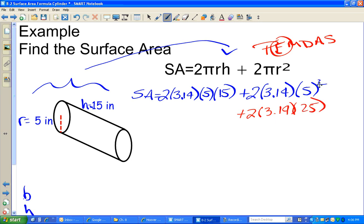So this is going to become 2 times 3.14 times 25. 5 squared is 5 times 5. So now all that's left is for me to multiply these numbers together and add those results together.